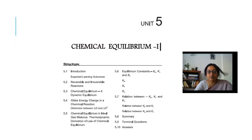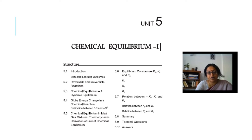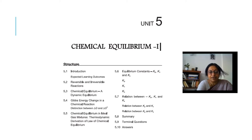Out of the Chemical Equilibrium, there are 2 units. The objectives are to explain Chemical Equilibrium, derive an expression for the Equilibrium Constant in terms of Gibbs Energy, state Le Chatelier's Principle, and explain its applications.